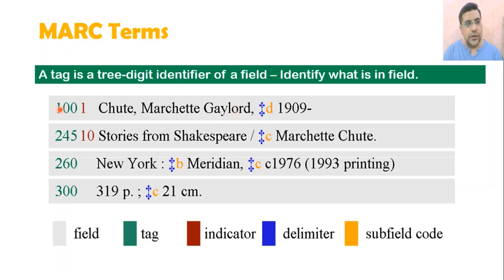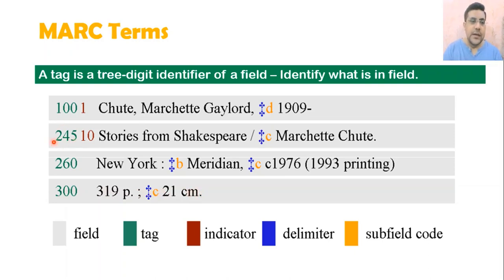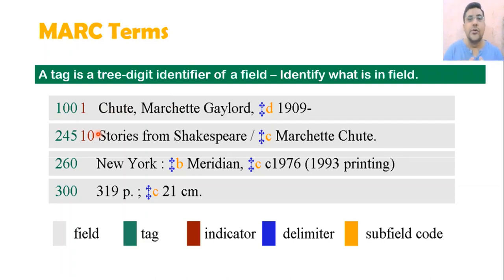Tag 100 is for author, 245 is for title, and 260 is for the imprint area. This information is for physical description. For example, if you write 'Stories from Shakespeare' in tag 100 instead of 245, the computer will interpret that 'Stories from Shakespeare' is the author name of your record.